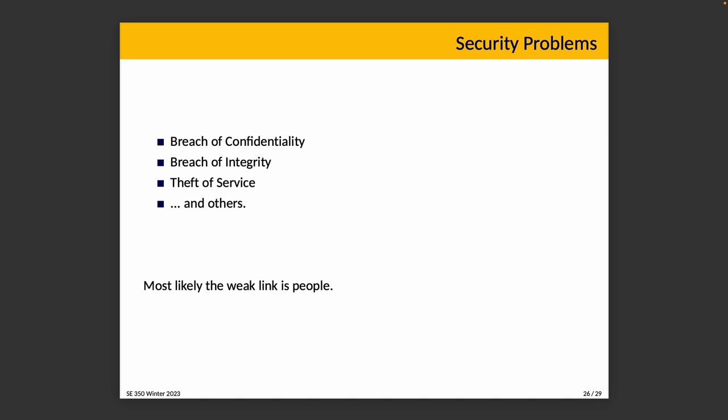Theft of service is what happens when an attacker makes use of resources they shouldn't have — maybe getting paid software without paying, or using company servers to mine cryptocurrency. Breach of availability and denial of service is what happens when an attacker prevents a service from working as intended — it might be overwhelming a service with too many requests, or deliberately crashing a server by uploading a request that causes it to run out of memory. I'm not saying do this. Please don't.